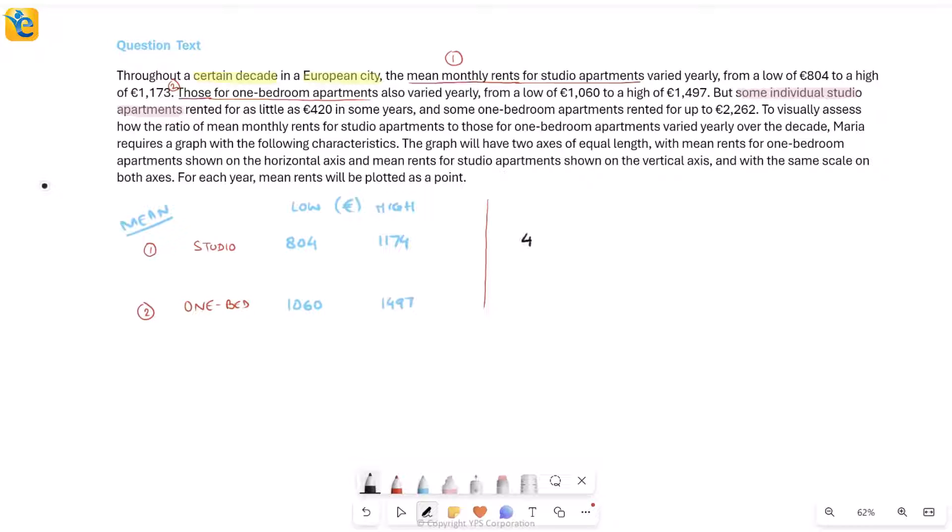Some studio apartments went as low as 420 euros. And then if I read further, it's also telling me about some one bedroom apartments that rented for up to 2262. They're trying to show that this is greater than even the mean that you had, but that is okay. This is the greatest possible average monthly rent, but this is from a specific month. Similarly, this 420 is from a specific month. This does not in any way contradict my first piece of information. Now let's read further.